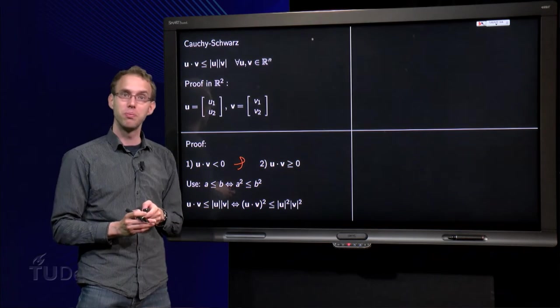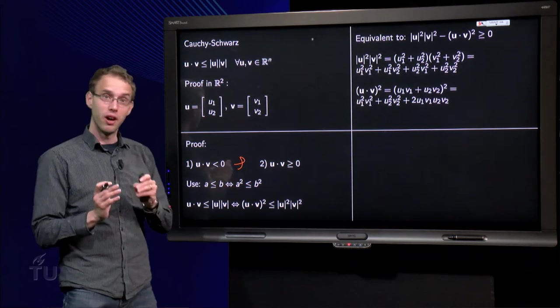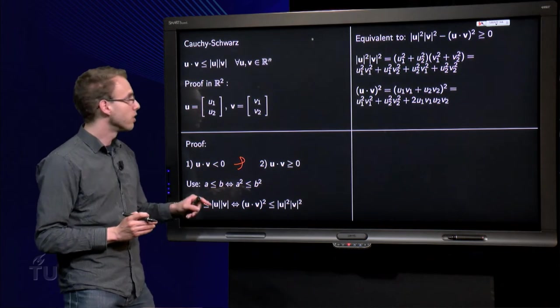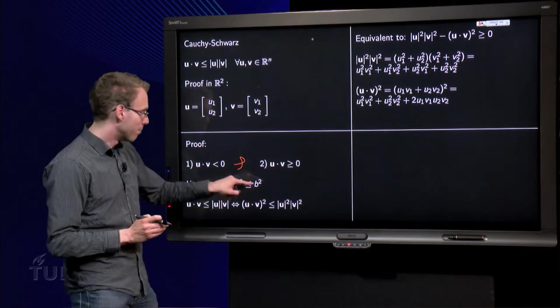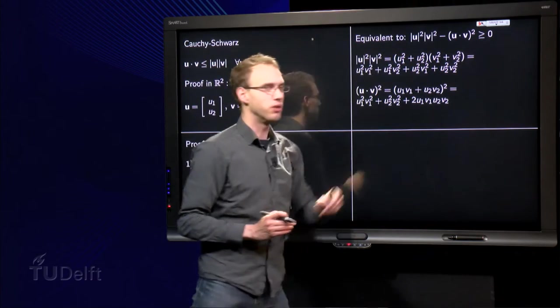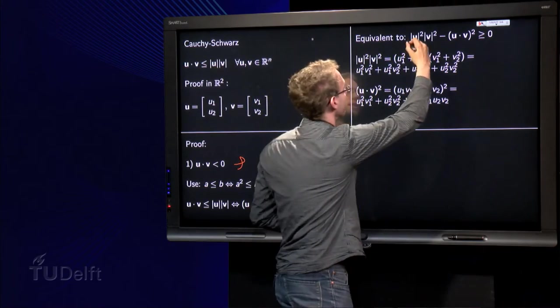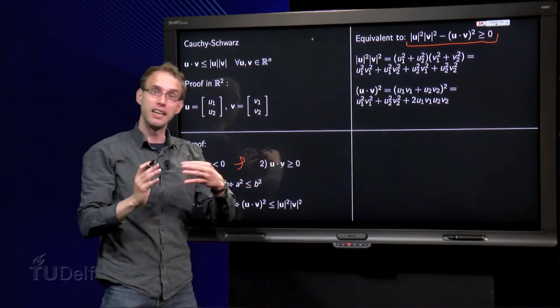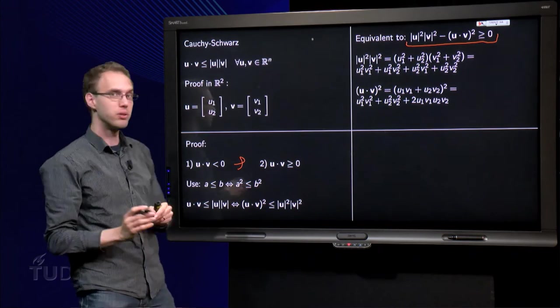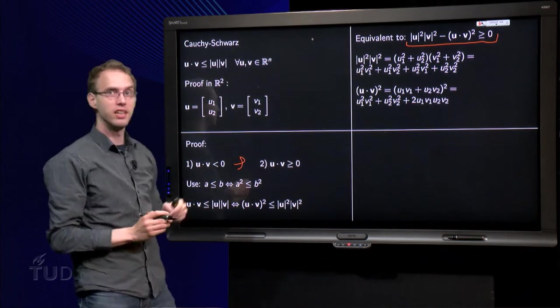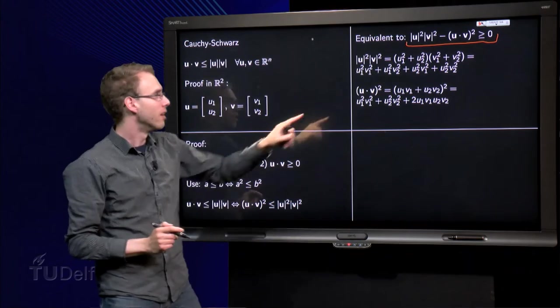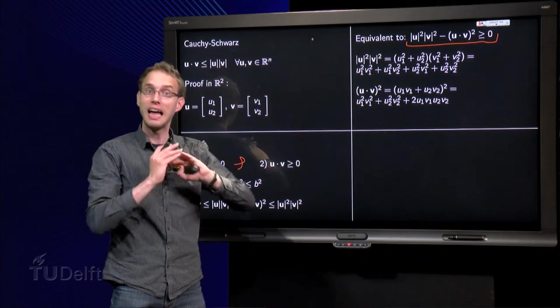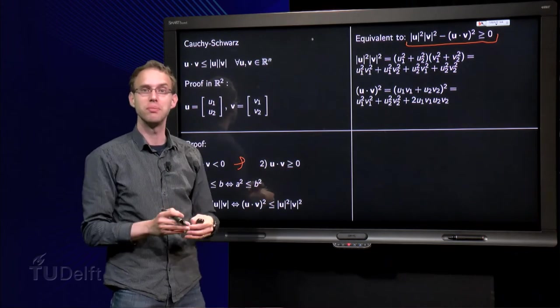How are we going to prove this one? Well, we use another trick. We take this inner product here to the right hand side. So, we will show that the product of these lengths minus the inner product is positive. So, this over here is the inequality we want to prove. And that one is exactly equivalent to the first inequality.